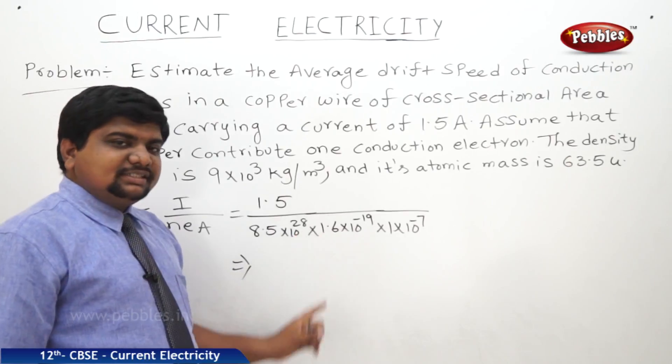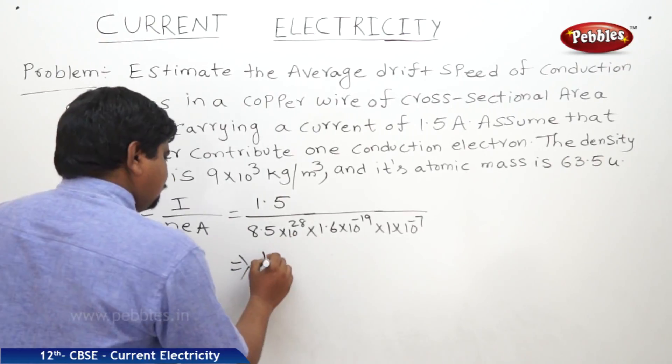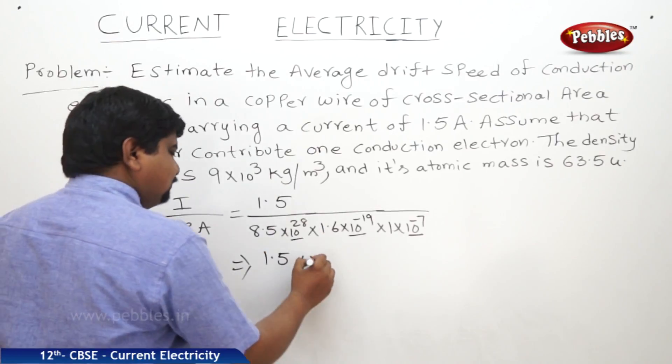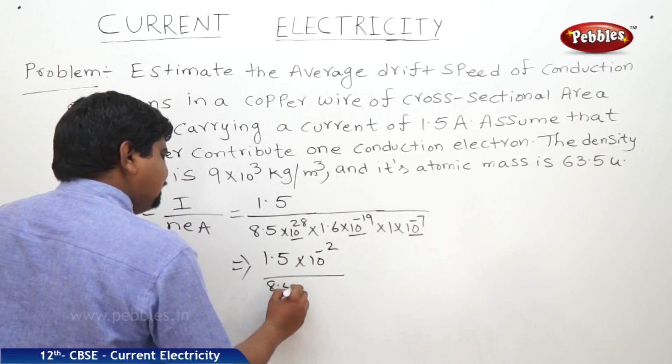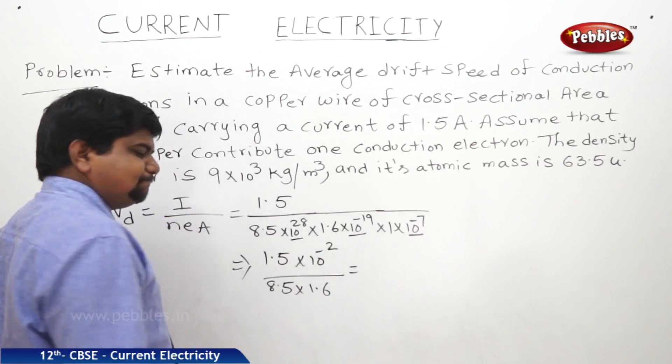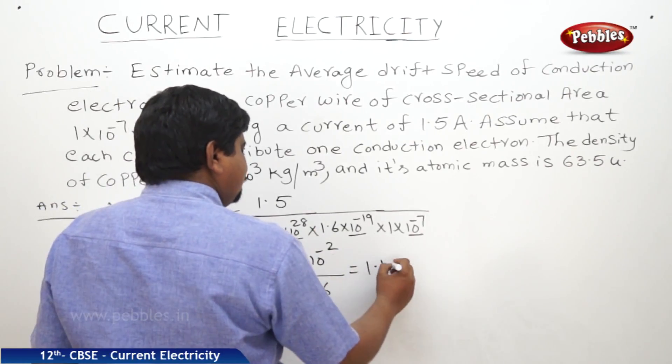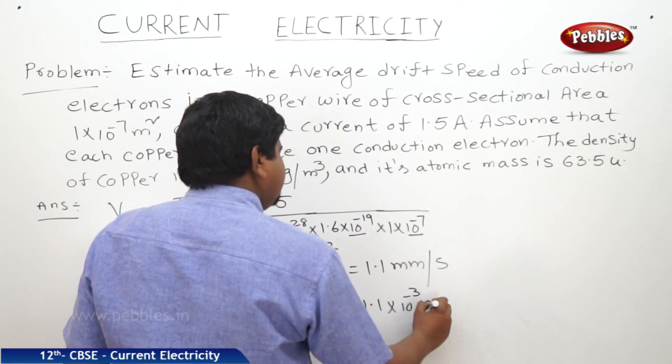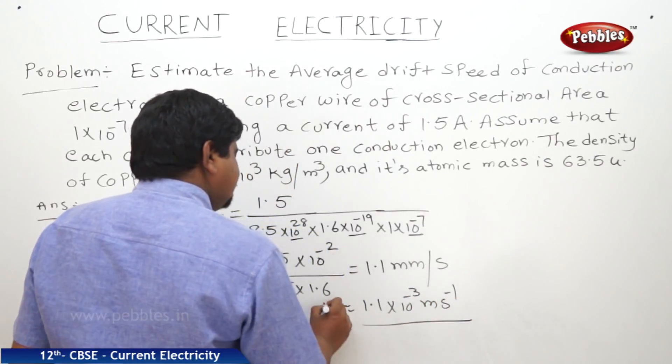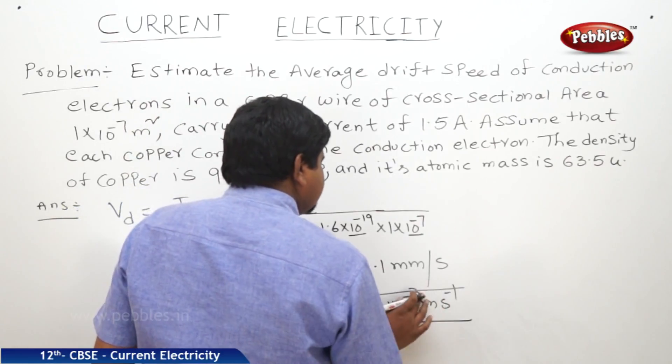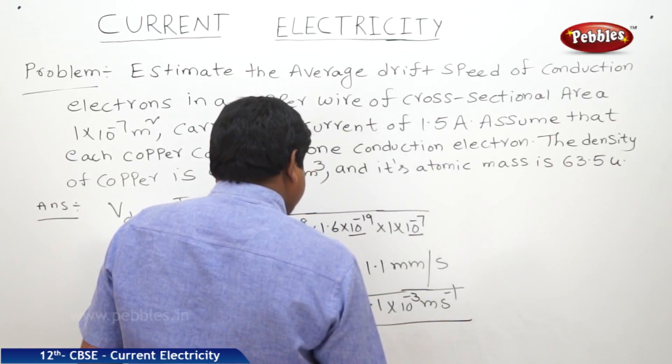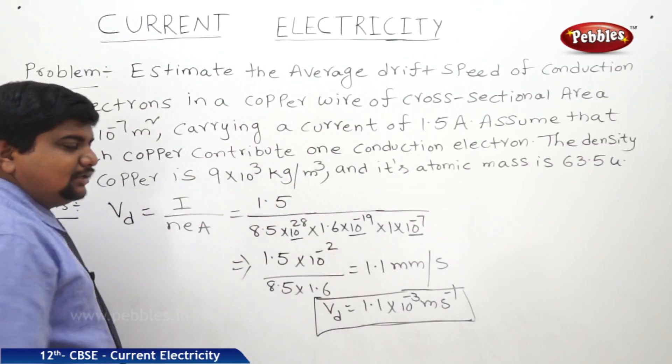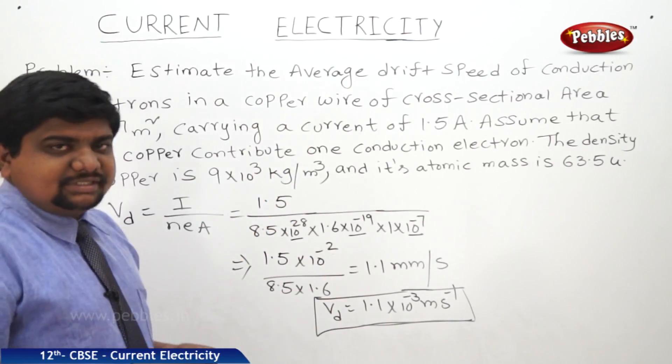So if we calculate these things, we will get the answer like this. 1.5 into, see here, 10 to the power of 28, 10 to the power of minus 19, 10 to the power of minus 7. It is 10 square, it goes up 10 to the power of minus 2. By 8.5 into 1.6. If we calculate all these things, we will get 1.1 millimeters per second, otherwise 1.1 into 10 to the power of minus 3 meters second inverse. This is the drift speed of electrons under the influence of these conditions.